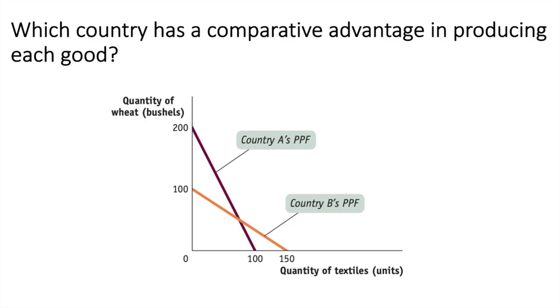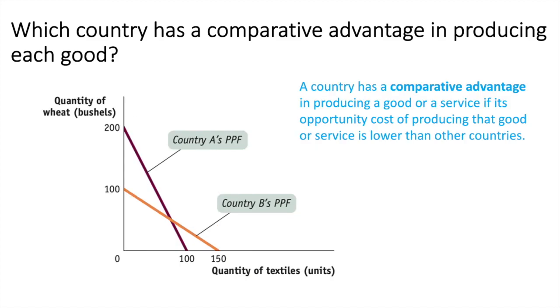Let's start with our definition. A country has a competitive advantage in producing a good if its opportunity cost of producing that good is lower than other countries.